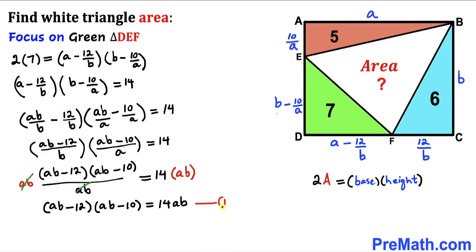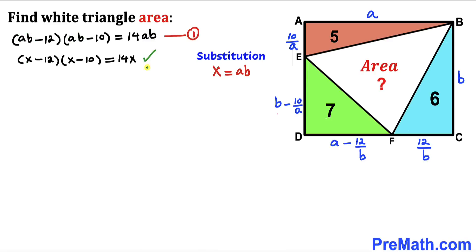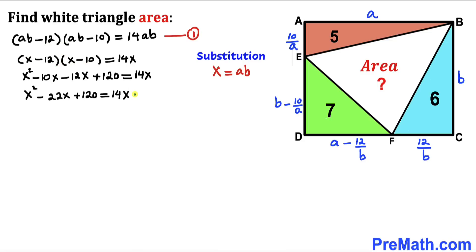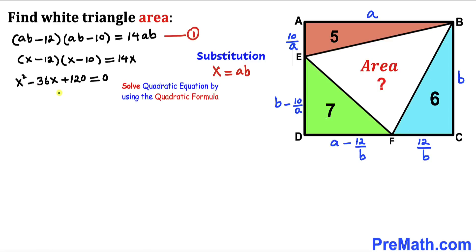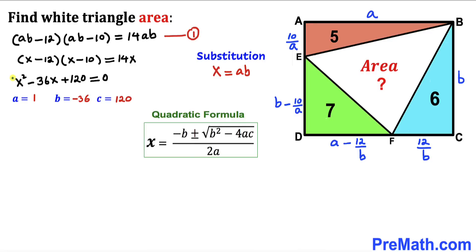Now we make a substitution: let x = a × b. After substituting x throughout and performing double distribution, then moving the 14x term to the left-hand side, we obtain a quadratic equation. Using the quadratic formula, our leading coefficient is 1, b-value is −36, and constant c is 120.